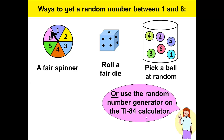Here at Walters State we use the TI-84 calculator and the random number generator command. The command will look like this: RANDINT — R-A-N-D-I-N-T — is the command, and 1 to 6 tells the calculator to pick a number between 1 and 6, including 1 and 6, or inclusive.